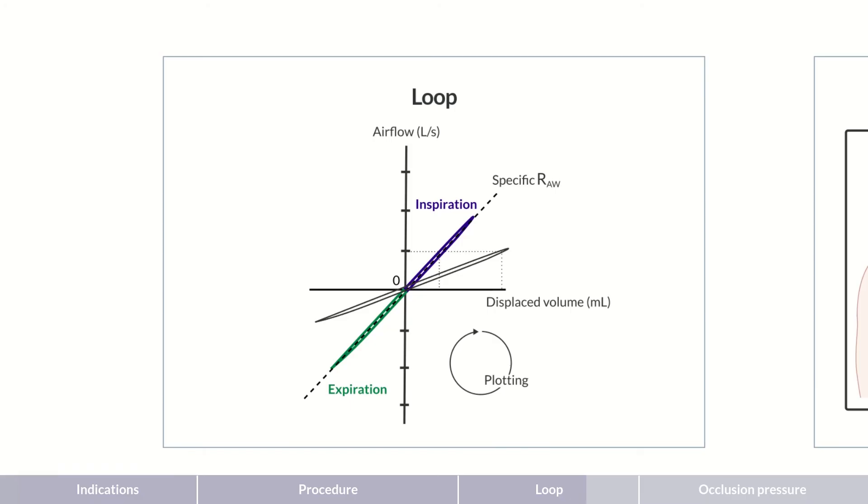In other words, the greater the displaced volume needed for generating a specific airflow. In clinical practice, a flat curve can indicate obstruction, namely, narrowing of the bronchi.